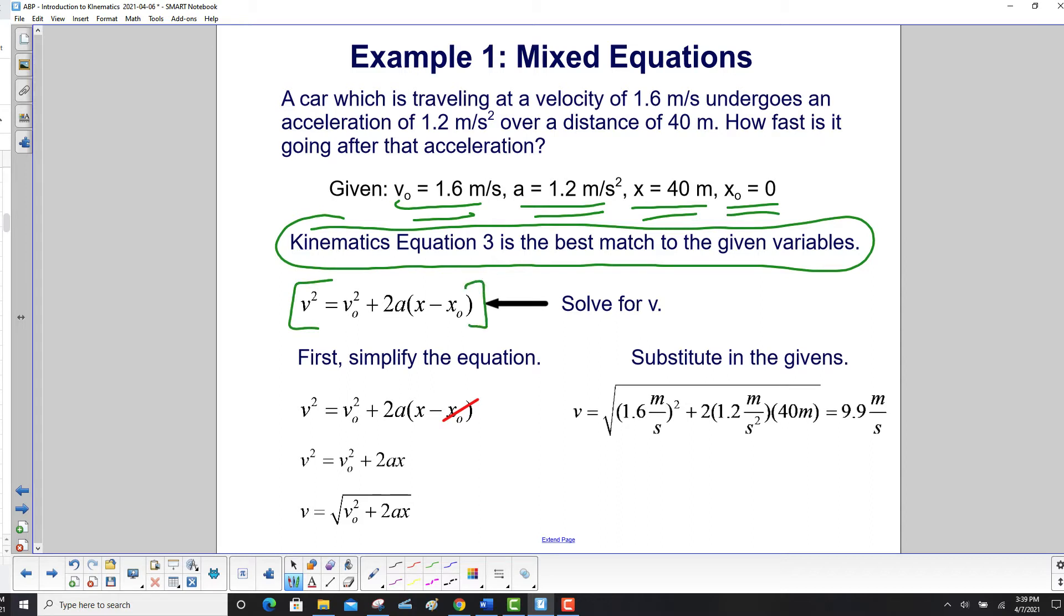So here's third kinematics. First, simplify the equation by zeroing out any terms, and that's x zero, that's equal to zero, so we right away get rid of that. We have v squared is your initial velocity squared plus 2ax. Take the square root of both sides to find your equation for your final velocity here.